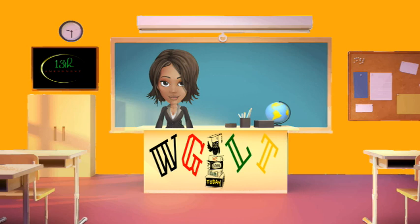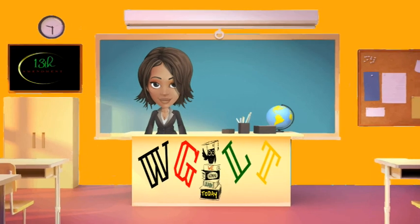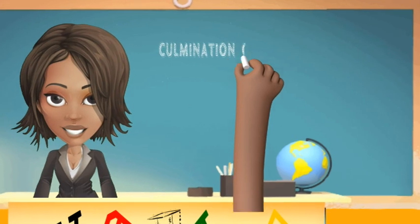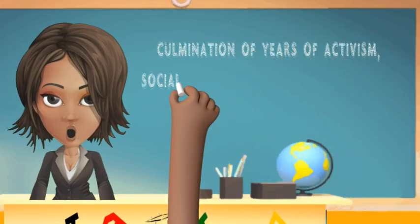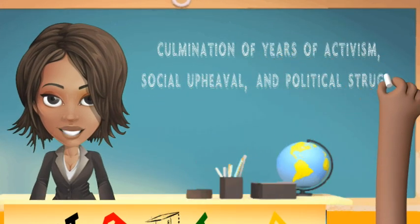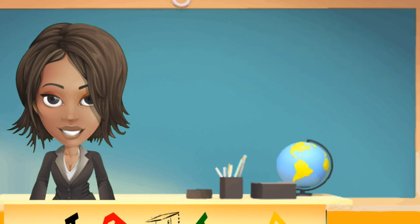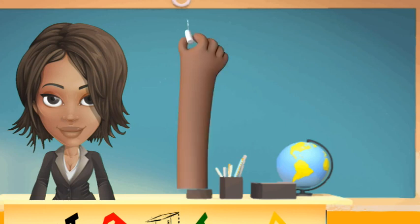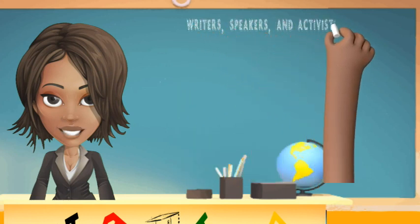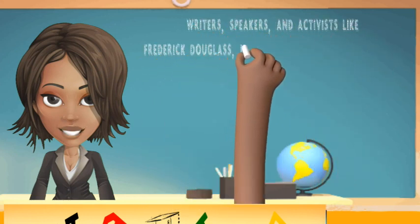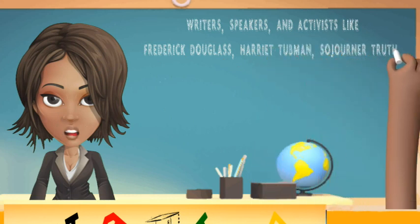This concise yet powerful statement aimed to eradicate the institution of slavery, which had been deeply entrenched in the country since its colonial days. The amendment's passage was the culmination of years of activism, social upheaval, and political struggle. Abolitionists, many of whom were driven by a moral commitment to ending the inhumane practice of slavery, played a crucial role in raising awareness.